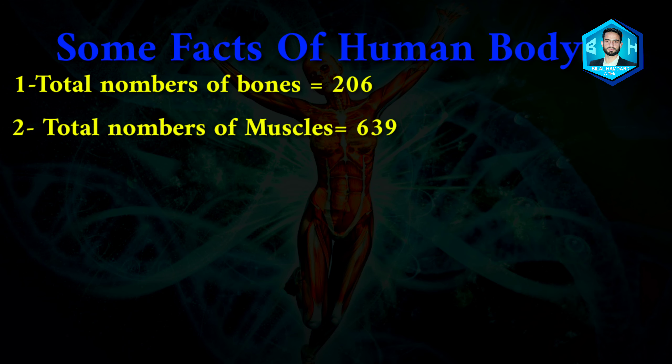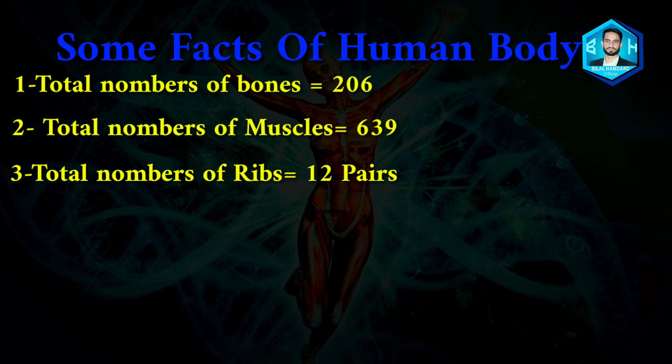Number two: total number of muscles is 639. In the human body, there are 639 muscles in total. Number three: total number of ribs — in the human body the total number of ribs is 24.